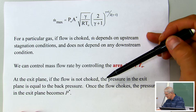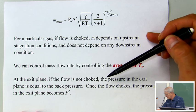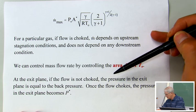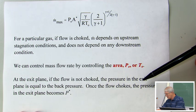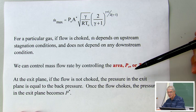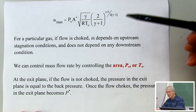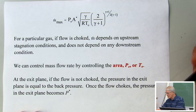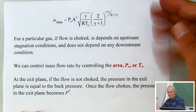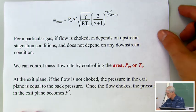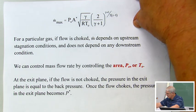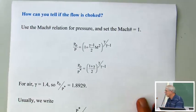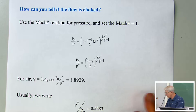At the exit plane, if the flow is not choked, the pressure in the exit plane equals the back pressure. But once the flow chokes, the pressure in the exit plane becomes P star, and as long as the flow is choked, that exit pressure will remain P star even though the back pressure is less than P star. So we need to know if the flow is choked or not.